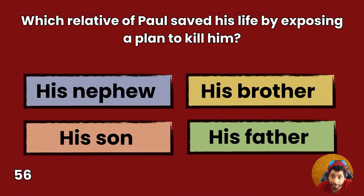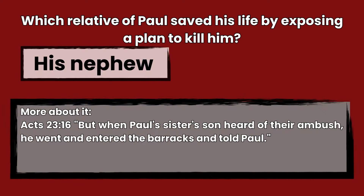Question 56: Which relative of Paul saved his life by exposing a plan to kill him? His nephew, his brother, his son, or his father? Answer: His nephew. Acts 23:16 — But when Paul's sister's son heard of their ambush, he went and entered the barracks and told Paul.